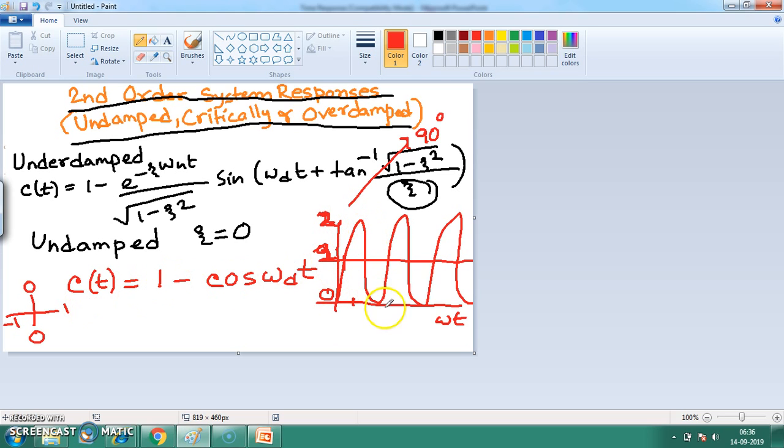In this way, if you proceed, you will get that this undamped response will vary between 0 to 2. Thank you.